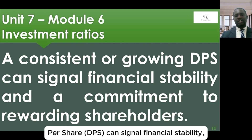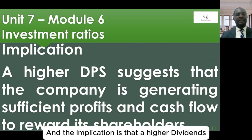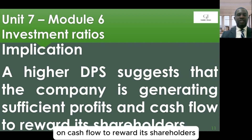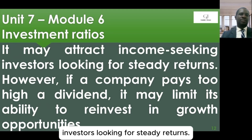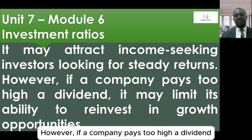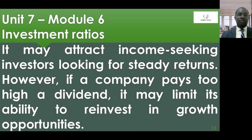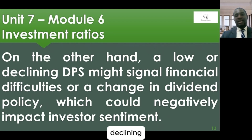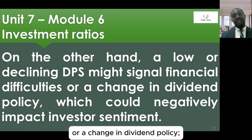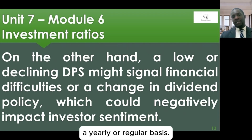A consistent or growing dividends per share can signal financial stability and a commitment to rewarding shareholders. A higher DPS suggests the company is generating sufficient profits and cash flow and may attract income-seeking investors looking for steady returns. However, if a company pays too high a dividend, it may limit its ability to reinvest profits in growth opportunities and expansion. On the other hand, a low or declining DPS may signal financial difficulties or a change in dividend policy, and could negatively impact investor sentiment.